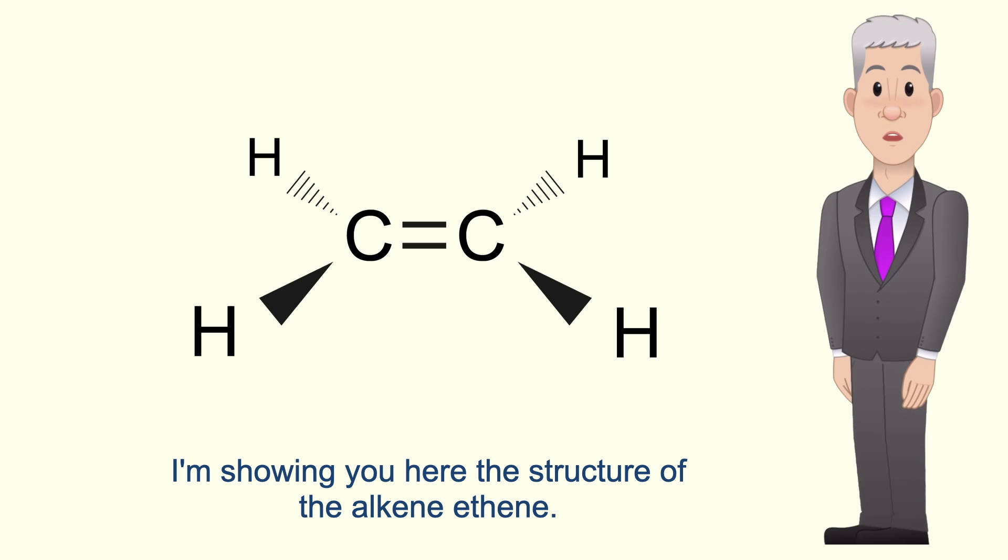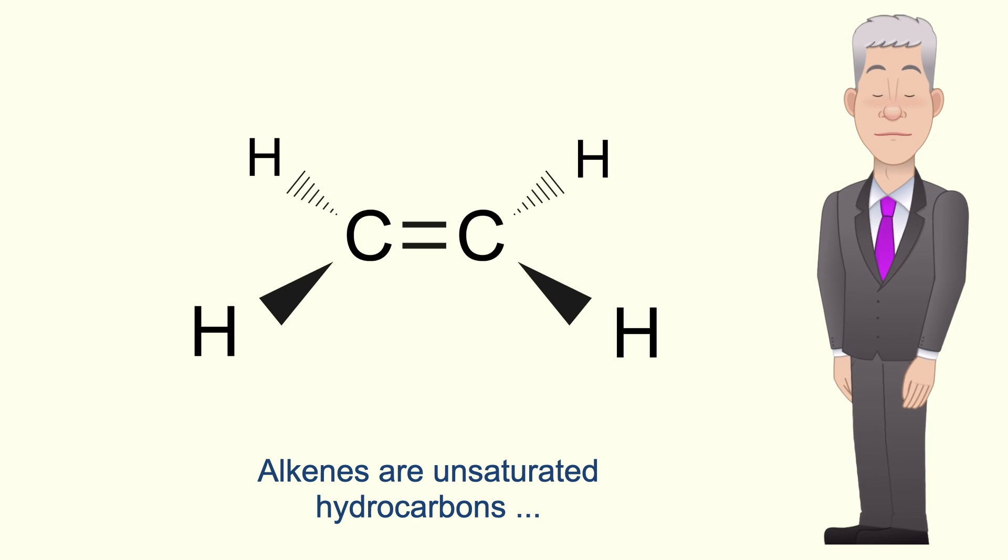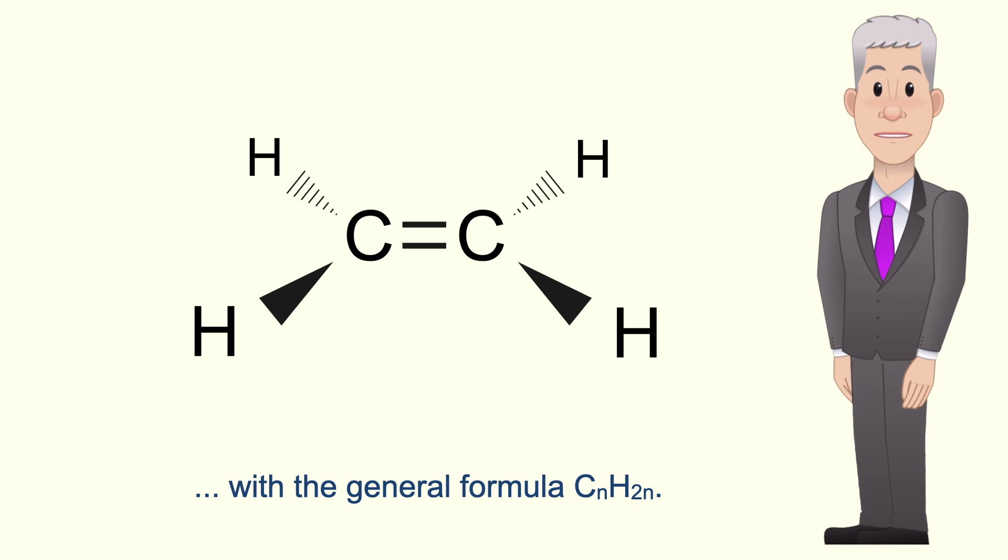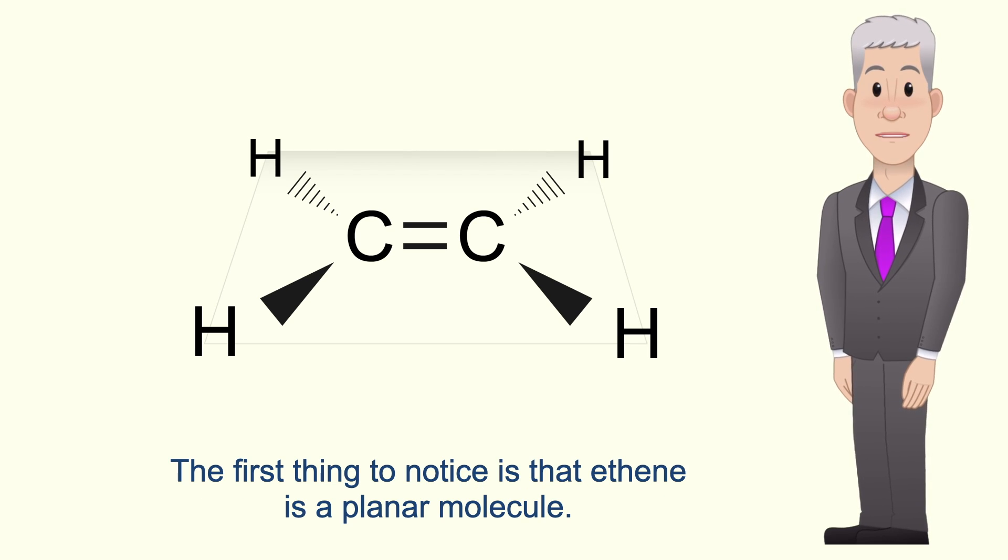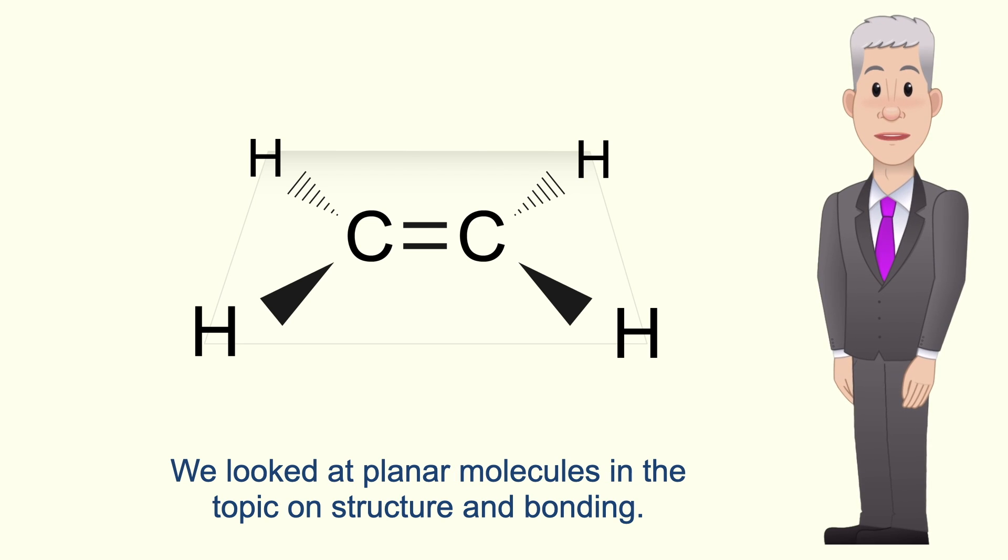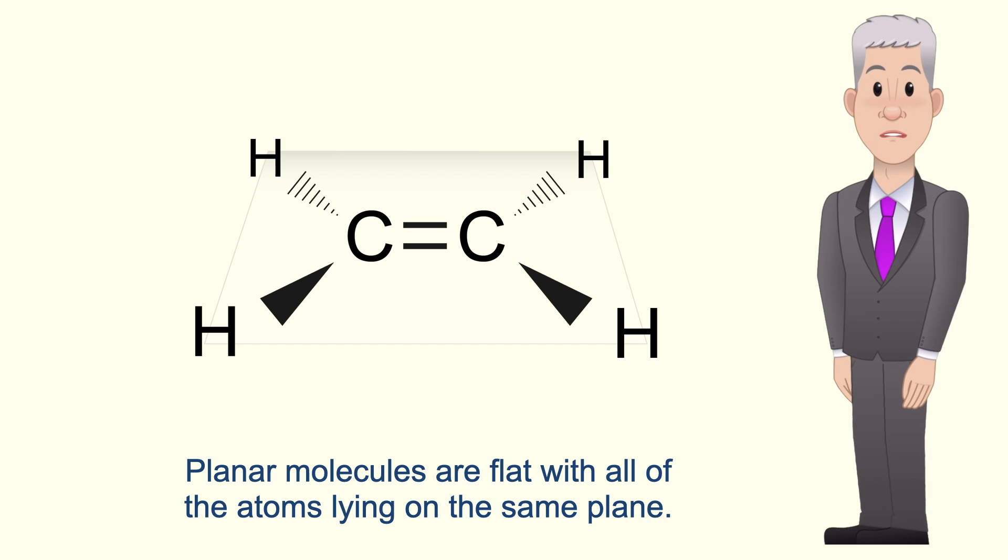I'm showing you here the structure of the alkene ethene. Alkenes are unsaturated hydrocarbons with the general formula CnH2n. Now the first thing to notice is that ethene is a planar molecule and we looked at planar molecules in the topic on structure and bonding. Planar molecules are flat with all of the atoms lying on the same plane.